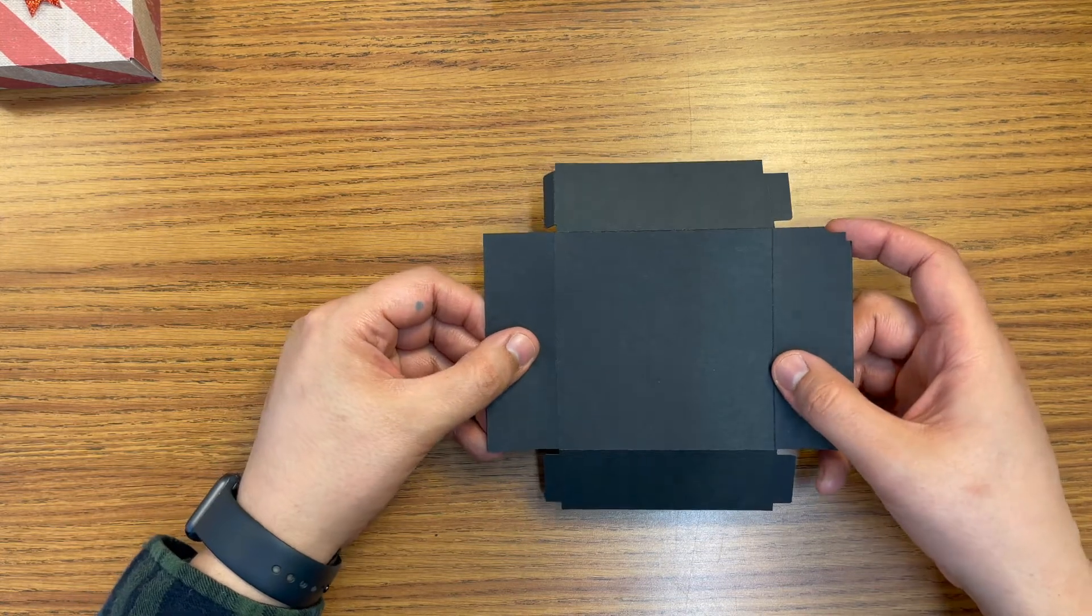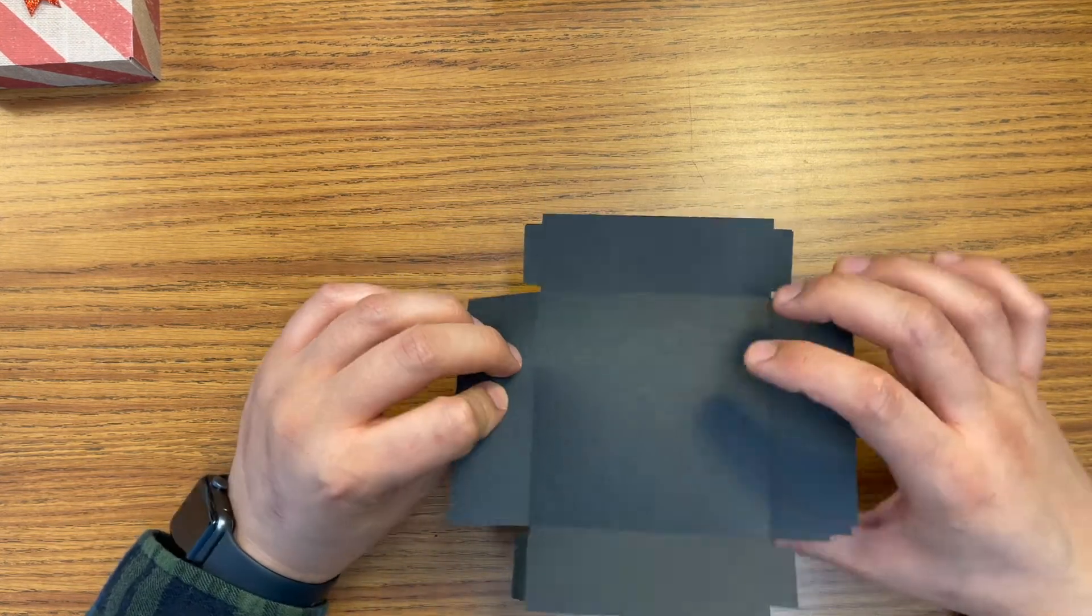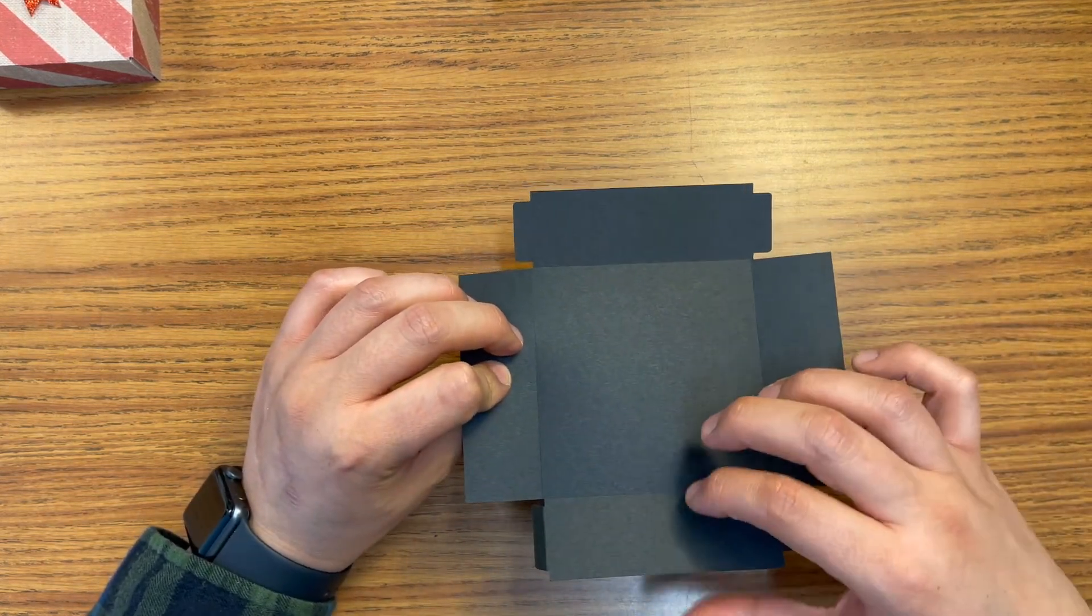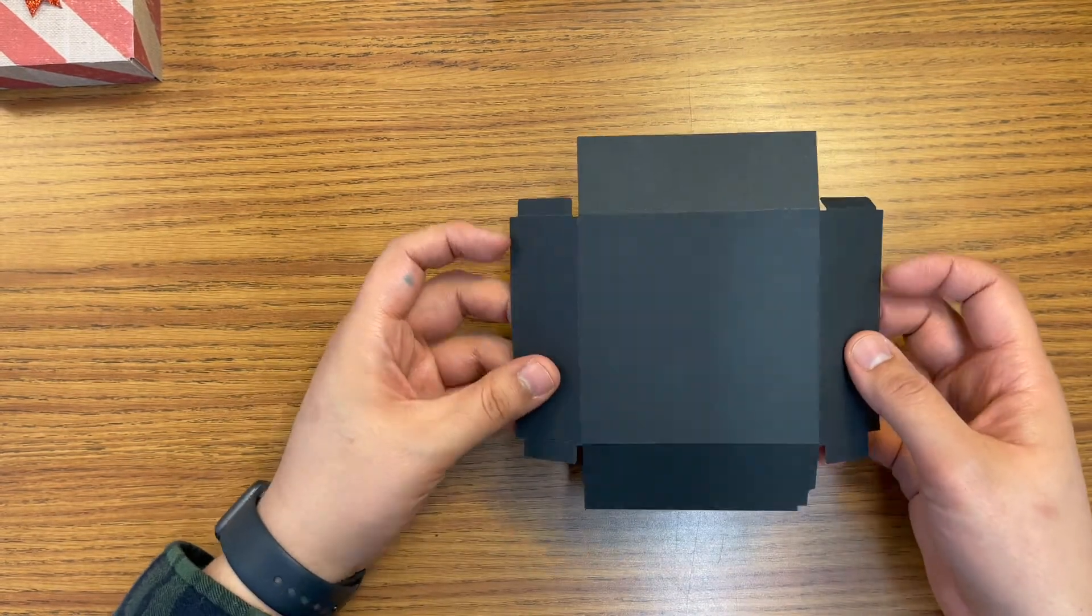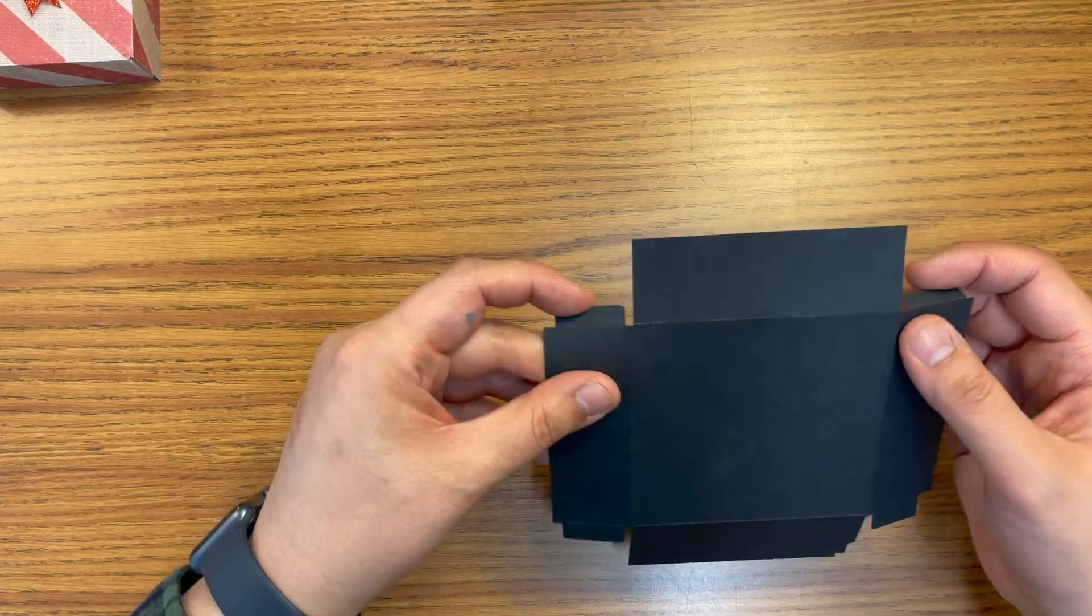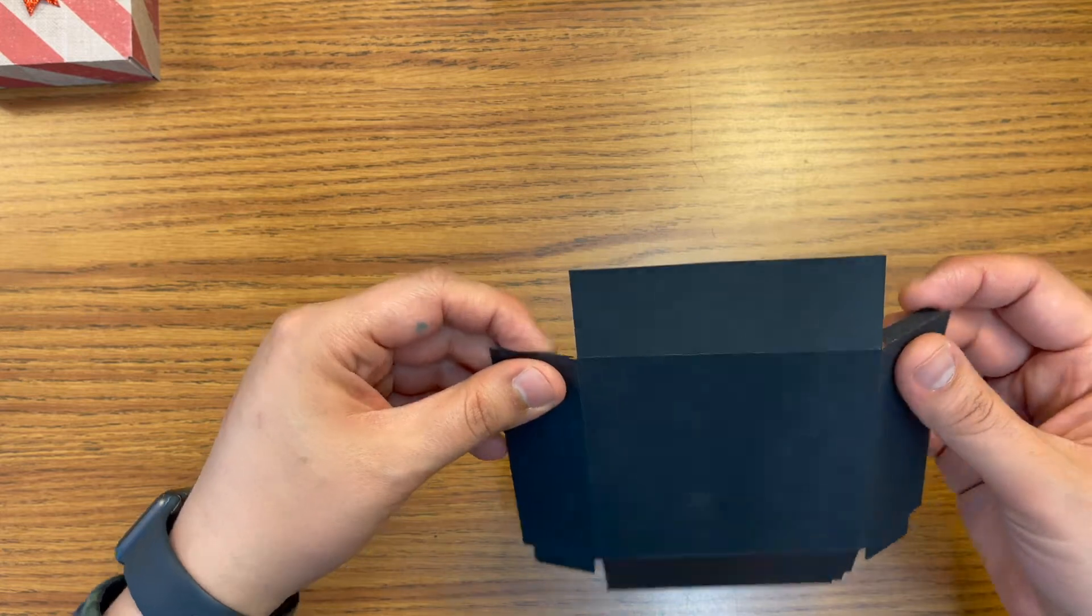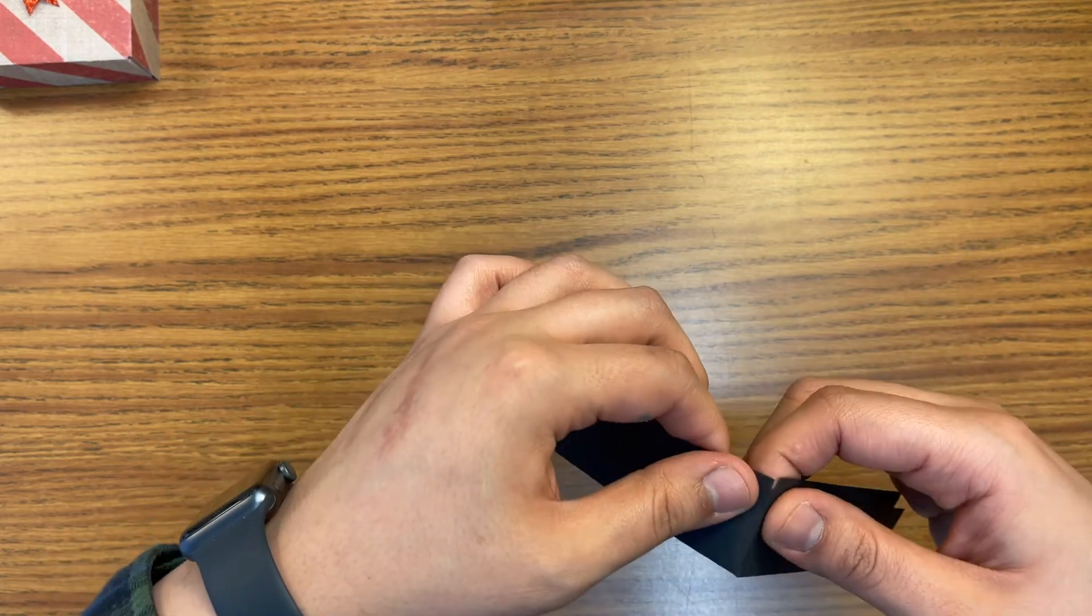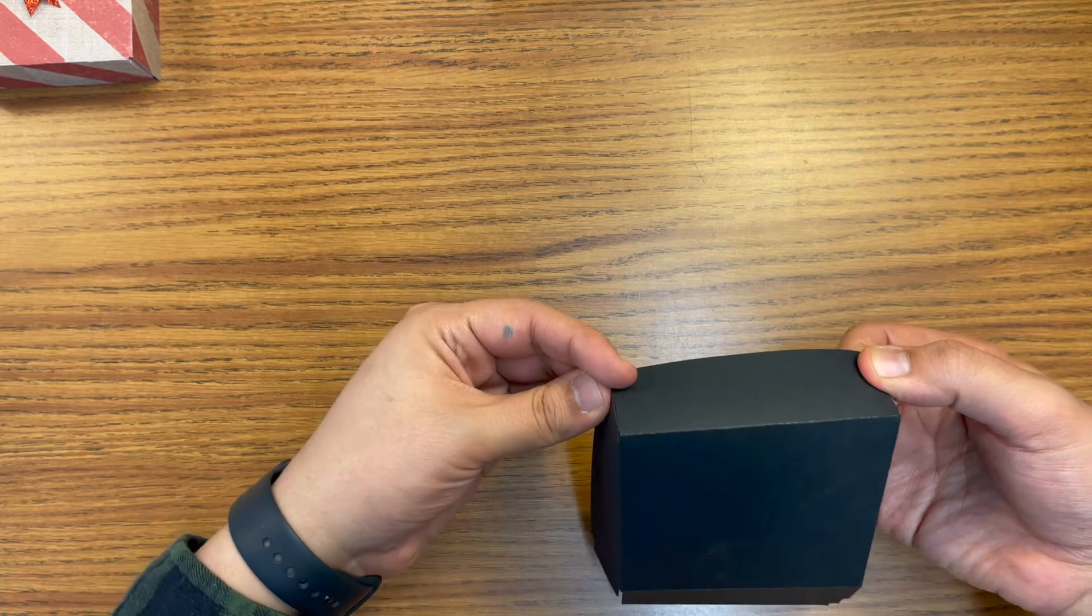You'll also do the same thing with the lid. The lid will be the same. It'll have the creases and you're going to want to fold away from the creases. And then they also have little creases that'll indicate some tabs. Those tabs are what you're going to want to glue or tape onto the box.